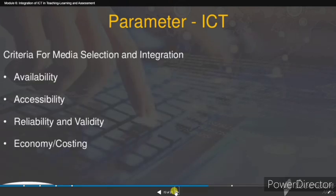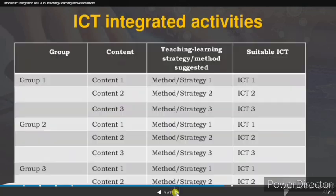The next ICT parameter covers criteria for media selection and integration, which include availability, accessibility, reliability, and validity at an economic cost.